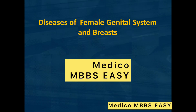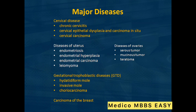Hello everyone. Today our topic is about diseases of the female genital system and breast. The major genital diseases of females are: cervical disease, chronic cervicitis, cervical epithelium dysplasia and carcinoma in situ, cervical carcinoma, diseases of the uterus, diseases of the ovary, gestational trophoblastic disease, and carcinoma of the breast.